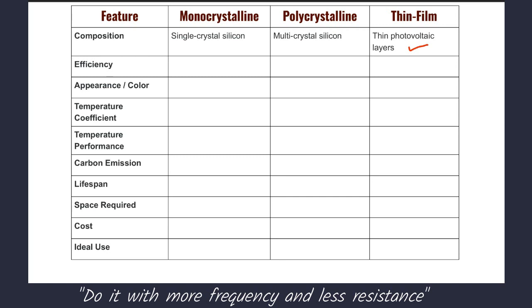The second feature is efficiency. Mono-crystalline solar panels have the highest efficiency among all types, with an efficiency range between 18 to 24%. Poly-crystalline panels are somewhat less efficient than Mono-crystalline, ranging between 15 to 19%. Thin-Film panels have the lowest efficiency, ranging between 10 to 18%.